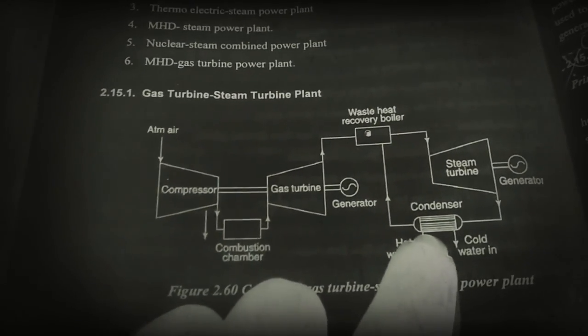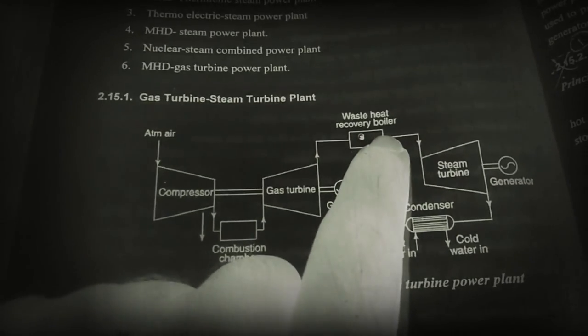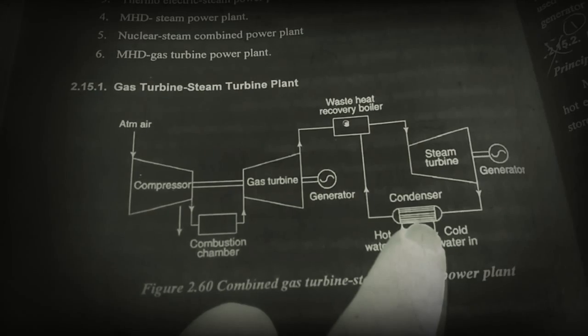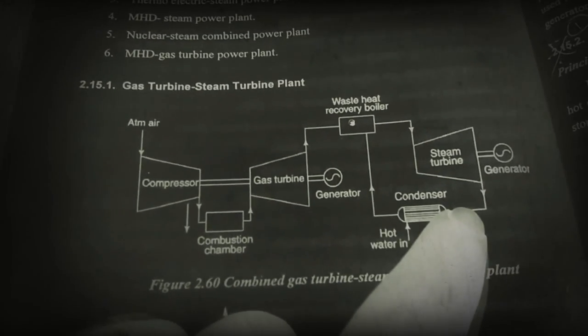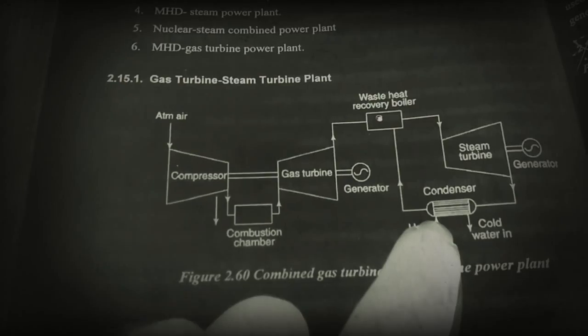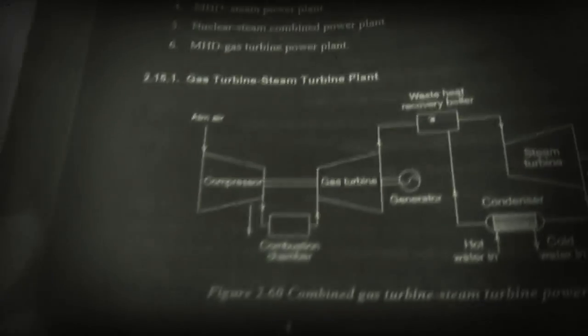and fed back to the waste heat recovery boiler. The condenser is used to condense the steam into water. That's it, it is very simple.